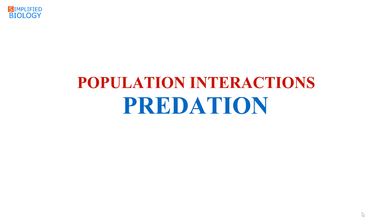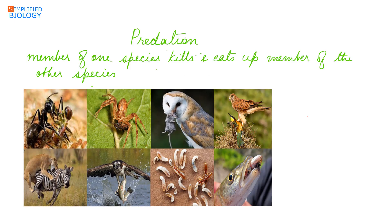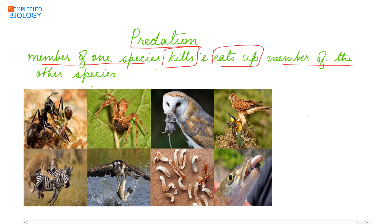Welcome to Simplified Biology. Today's topic is population interaction: predation. In predation, a member of one species kills and eats a member of another species. The one that kills is referred to as the predator and the one that is killed is the prey. This relationship is beneficial to the predator and harmful to the prey.